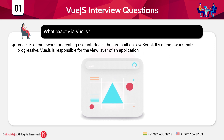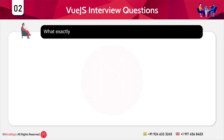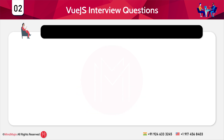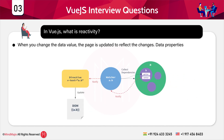The next question is: what exactly is the prop component? Data is passed from the parent component to the child component using props. A component can have as many props as it wants. A prop is a custom attribute that becomes a property of a component instance when a value is supplied. A component prop forms a one-way downward binding — when the parent's property changes, it affects the child, but not the other way around.